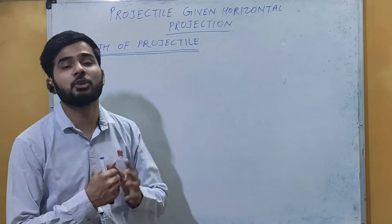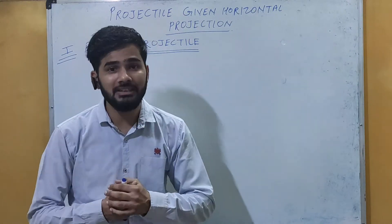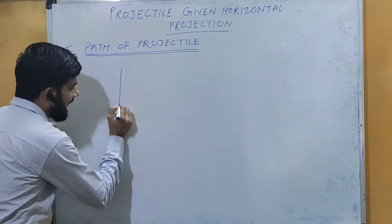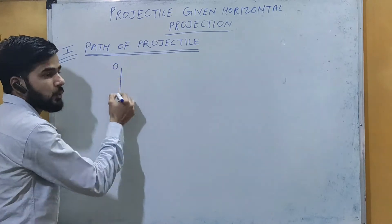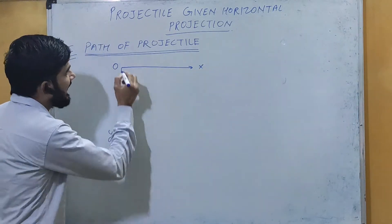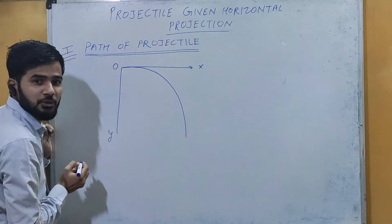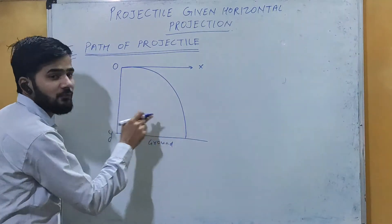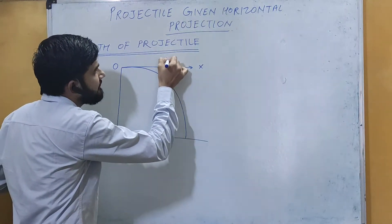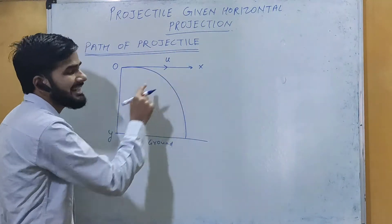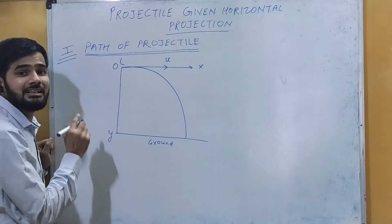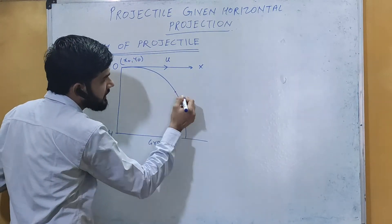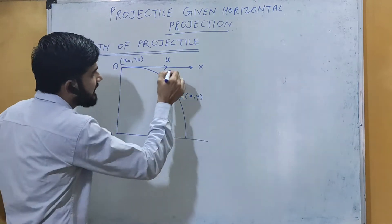When we have a projection moving in the horizontal direction, what will be its path? For that, we consider the Y-axis (OY) and the X-axis. Here we are throwing an object in horizontal projection, and below we have the ground. We assume the velocity with which the object is projected is u, the origin is O, with coordinates x-naught and y-naught, and the position point P has coordinates x and y.